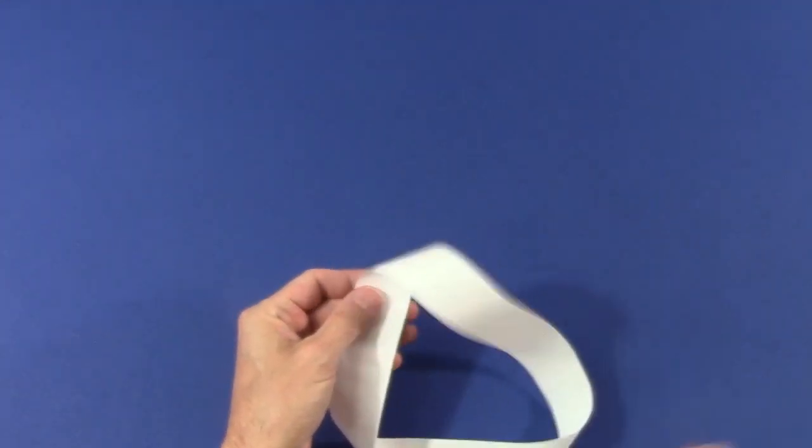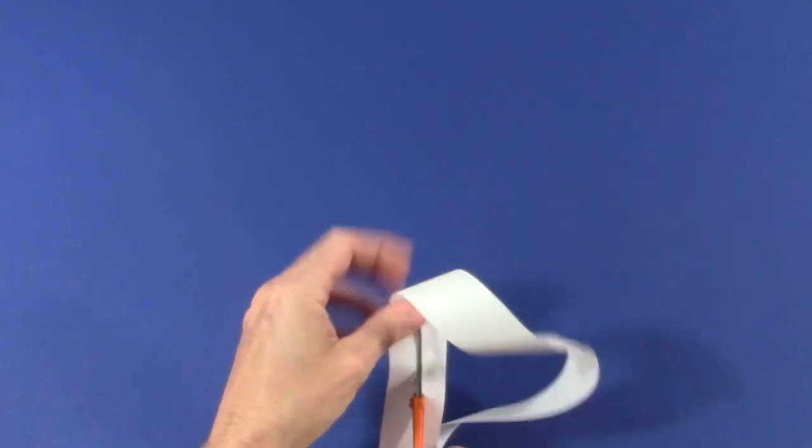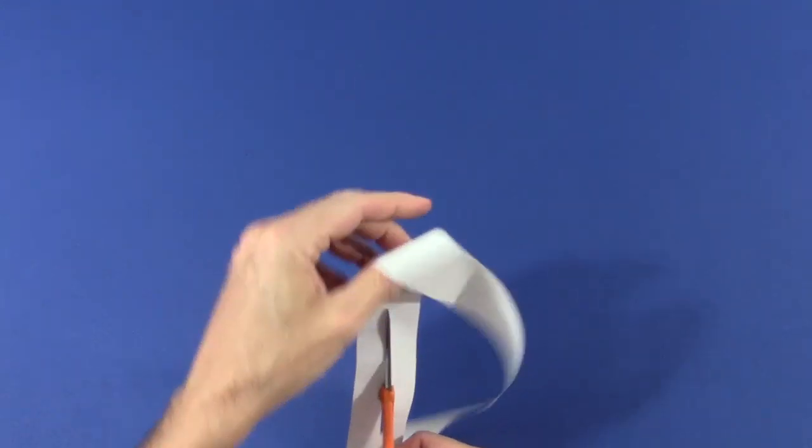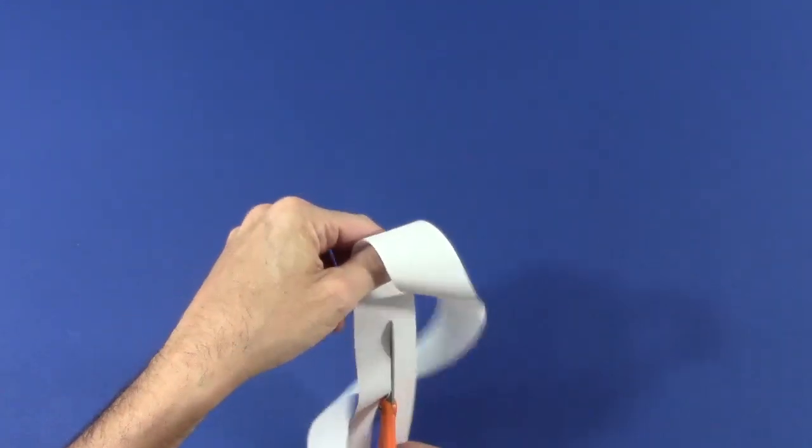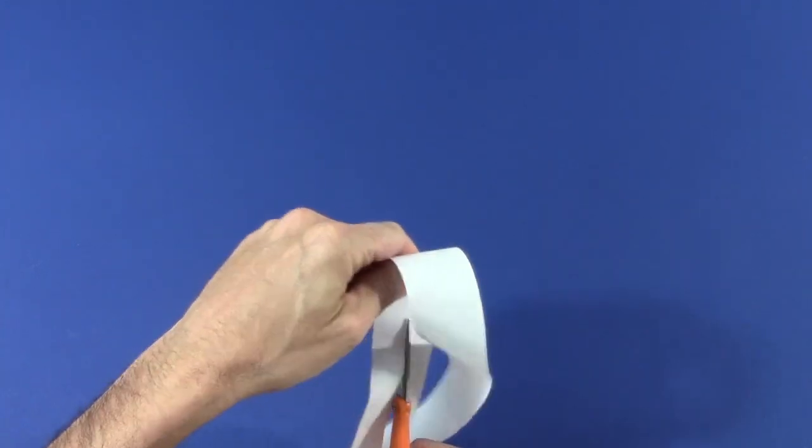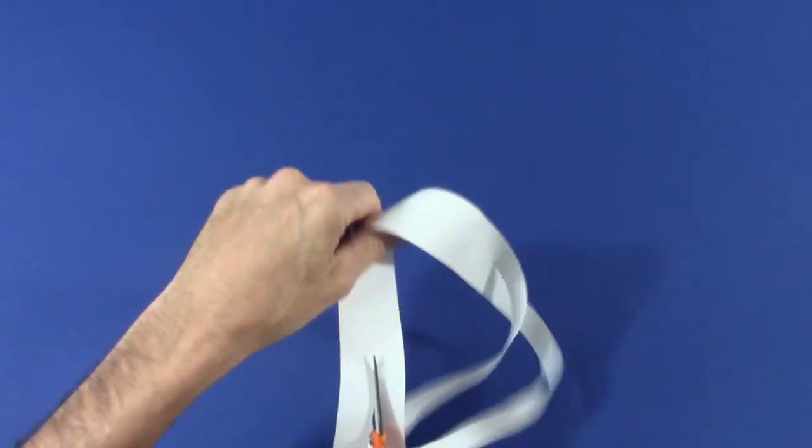If you want to try this with a real rubber band, I suggest you first get familiar with a three-halves twist paper mobius strip. Then try a bagel to understand the trajectory of the cuts before dealing with the thinness of the rubber band, which adds a dexterity challenge.